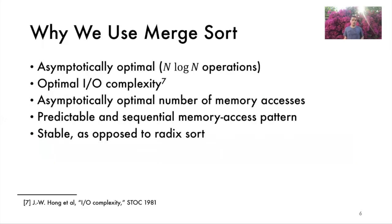First of all, Bonsai uses merge sort because it's asymptotically optimal, both in terms of the number of compute and IO operations. Additionally, it has predictable and sequential memory access patterns. And finally, merge sort is a stable sorting algorithm.